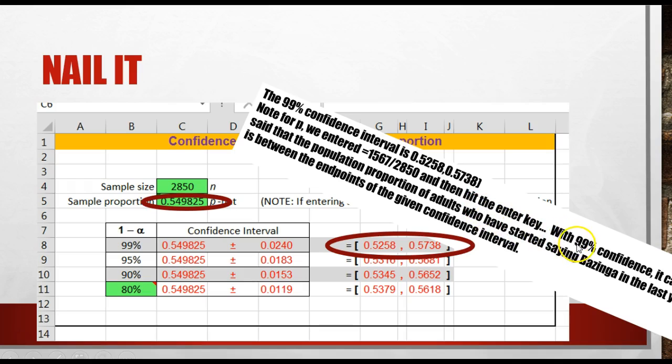So I would say with 99% confidence, it is said that the population proportion of adults who have started saying bazinga in the last year is between this interval. We nailed it. You know we nailed it.